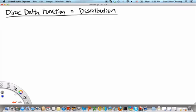Welcome to MH2801 video segment on the Dirac delta function as a distribution. In the previous video segment, we talked about how the Dirac delta function, δ(x-a), is equal to the limit of a family of parameterized functions, for example, the rectangular function with a unit area.